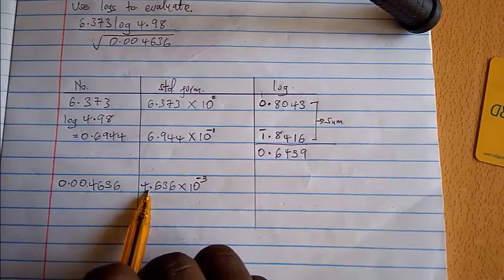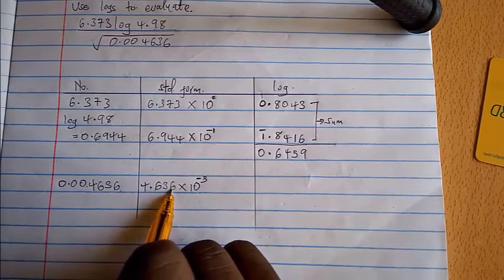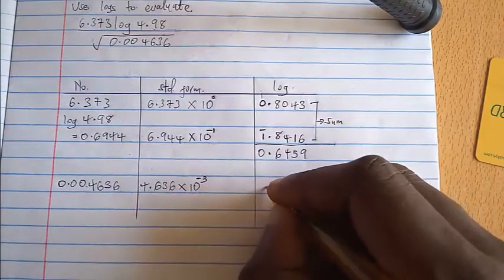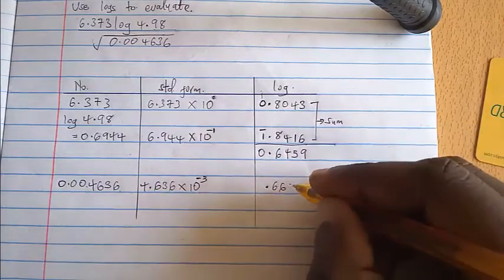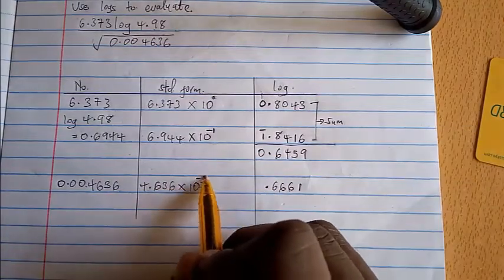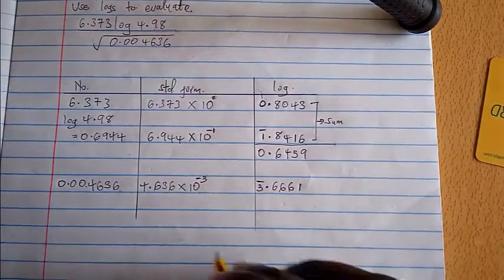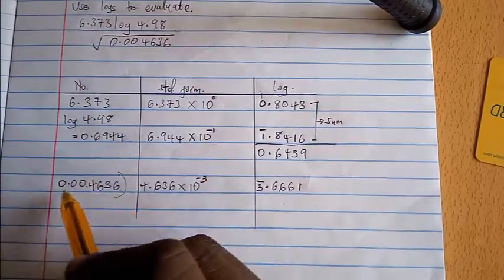So let's check in from our log tables what is the log of 4.636. And the log of 4.636 will be 0.6661. Now this bar 3 will be here negative three.